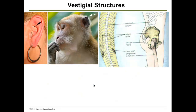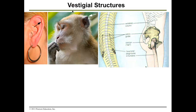Vestigial structures are other things that point to evolution — the fact that organisms can change over time. We sometimes retain a trait from past organisms that we share a common ancestor with. For example, there is a small tip on the human ear that is vestigial. Vestigial structures are structures that are no longer useful or functional in the modern organism, but they are a harbinger of the past.